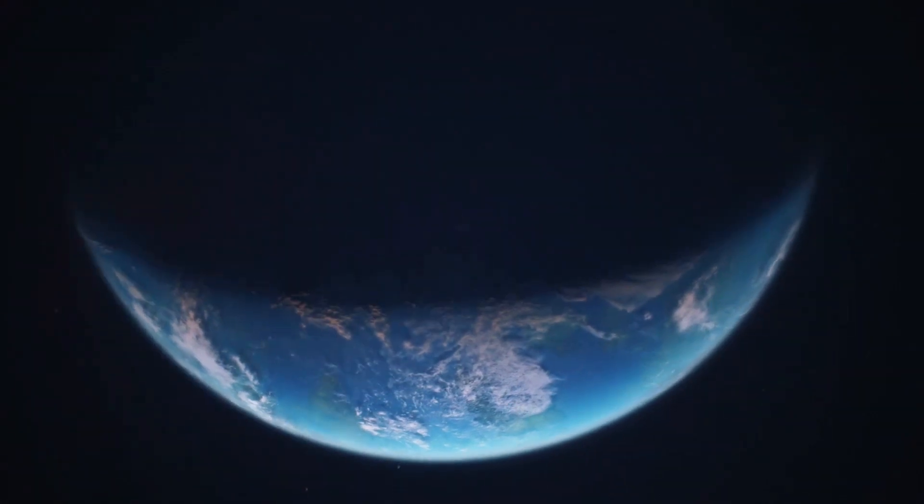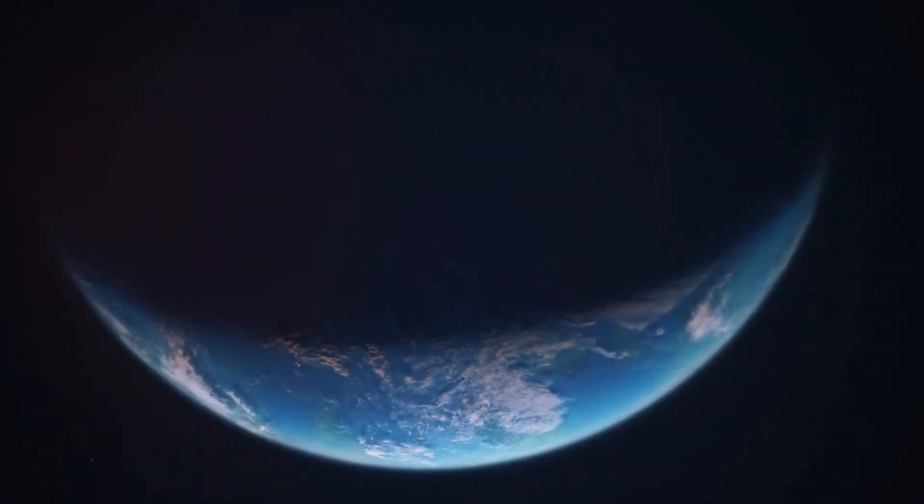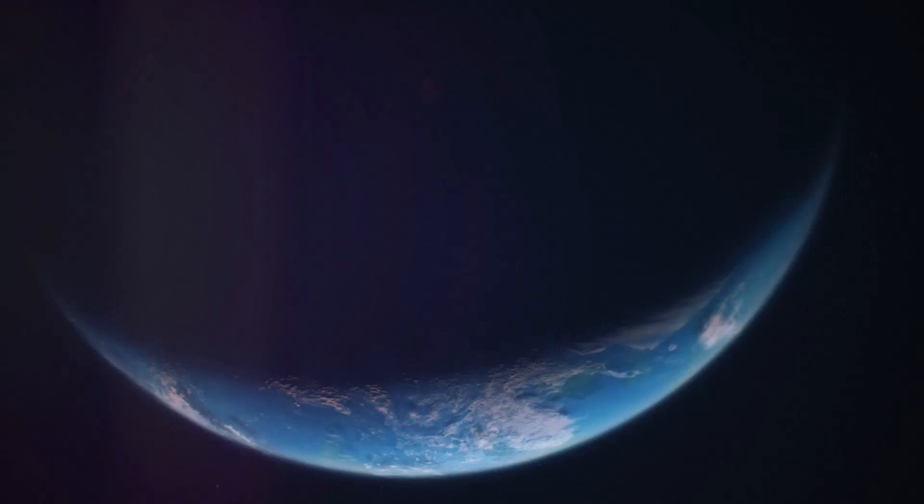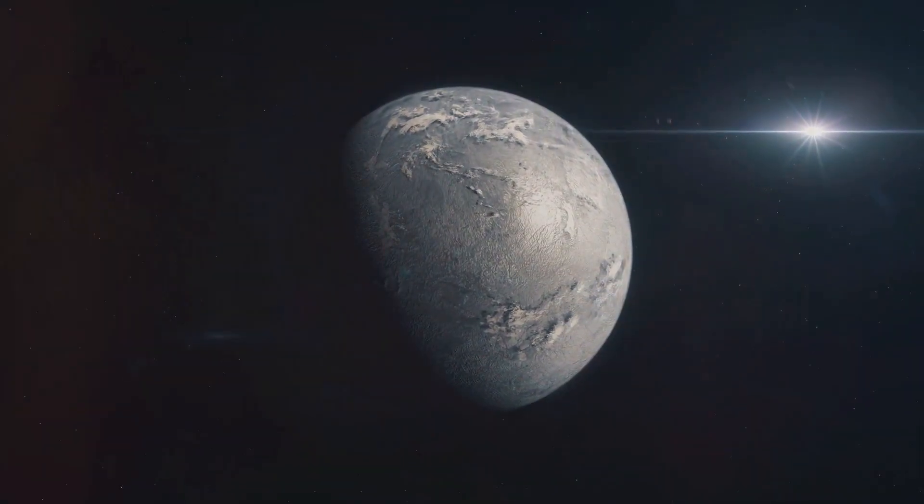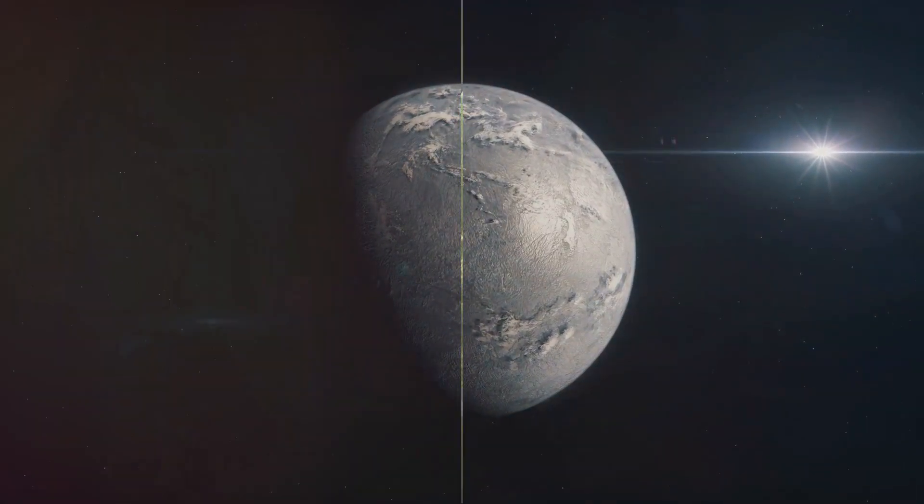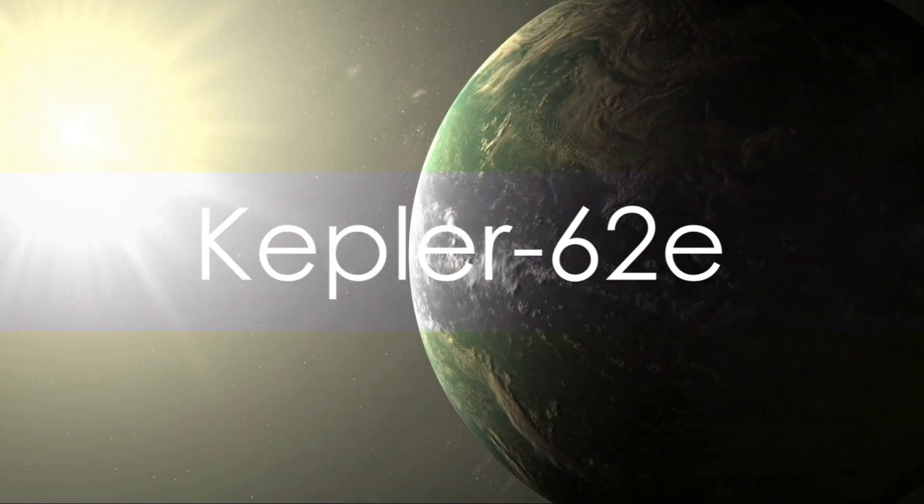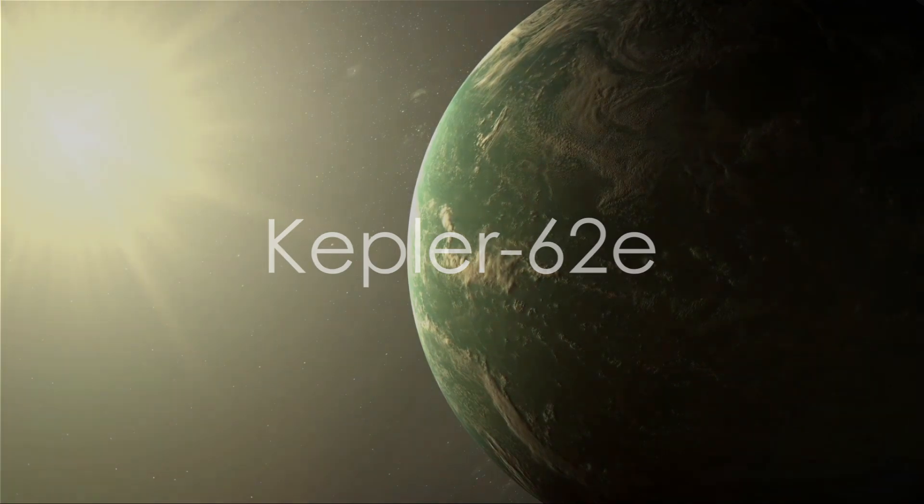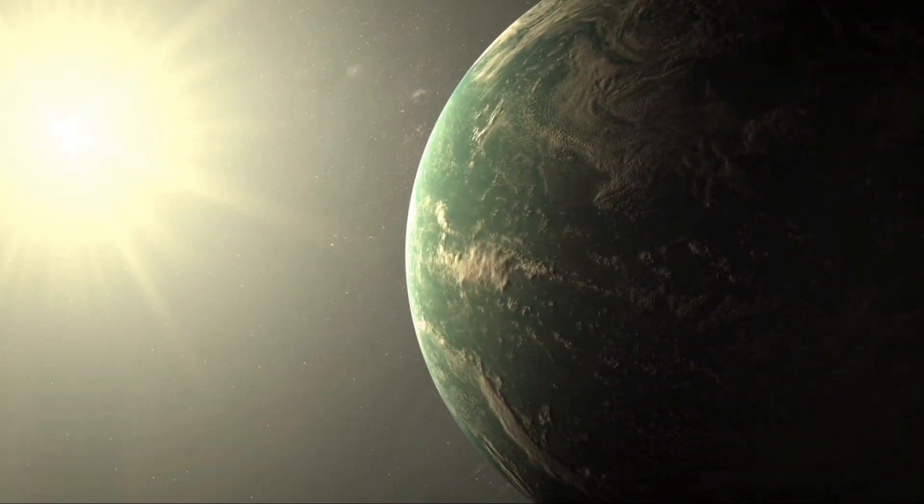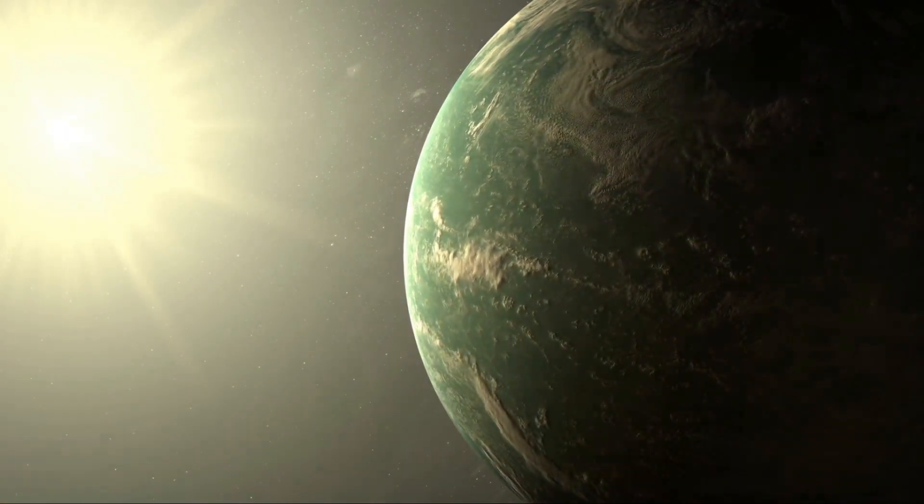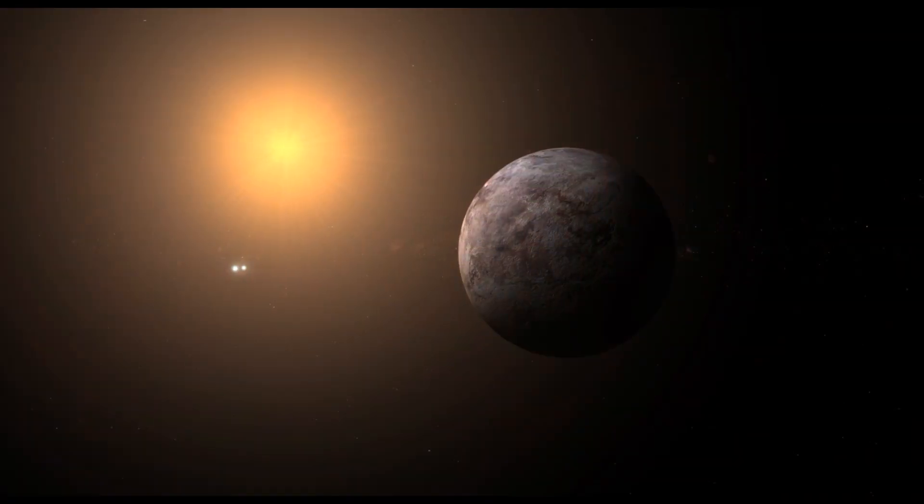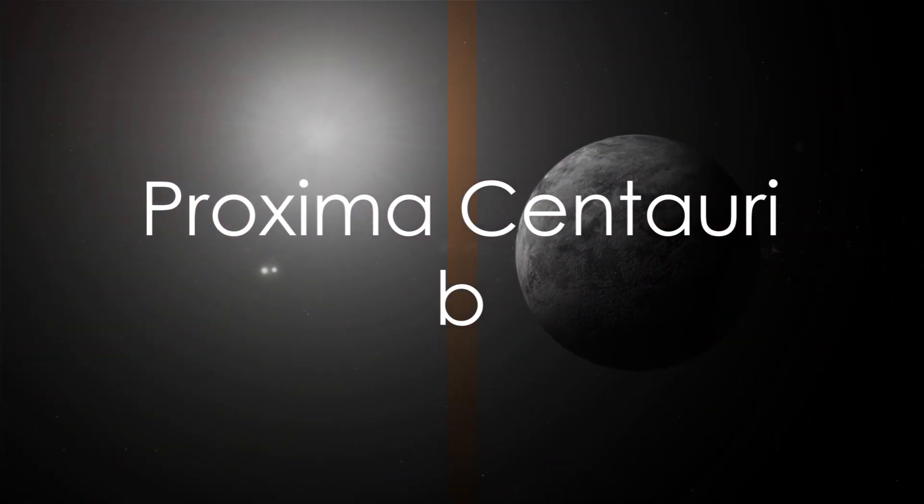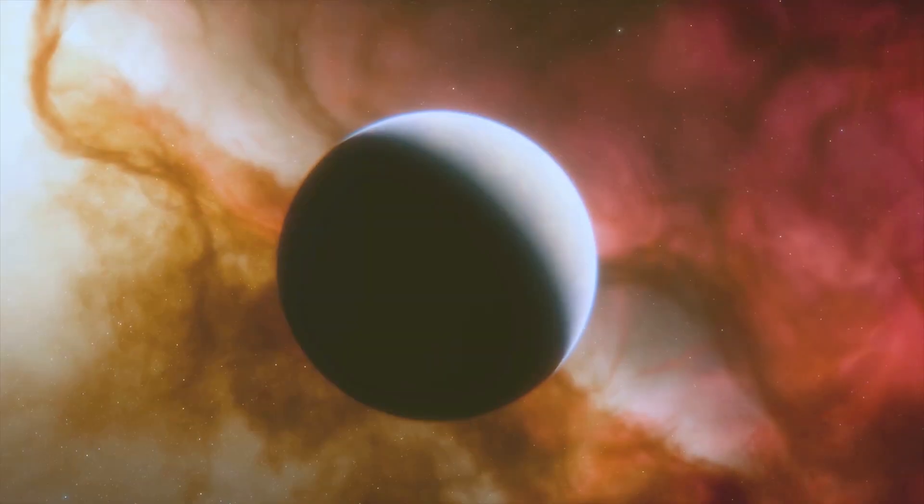This super-Earth exoplanet orbits a red dwarf star and receives about 90% of the light that Earth does. This could potentially mean the existence of liquid water, a key ingredient for life. Number eight takes us to Kepler 62e. This exoplanet is about 60% larger than Earth and orbits within the habitable zone of its star. It could potentially have a humid, cloud-covered atmosphere.